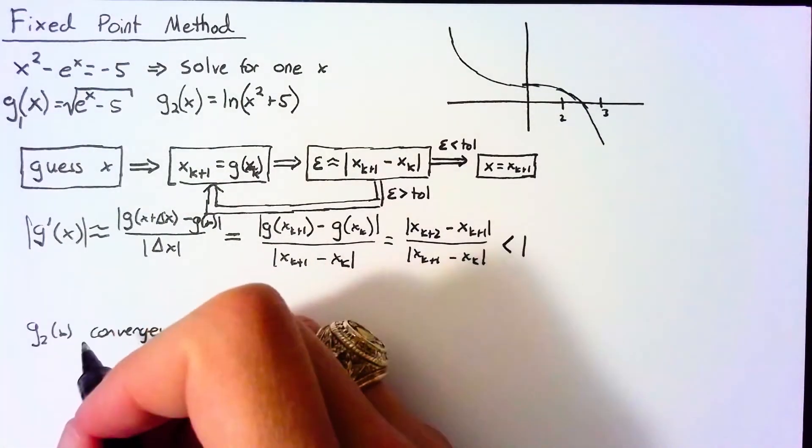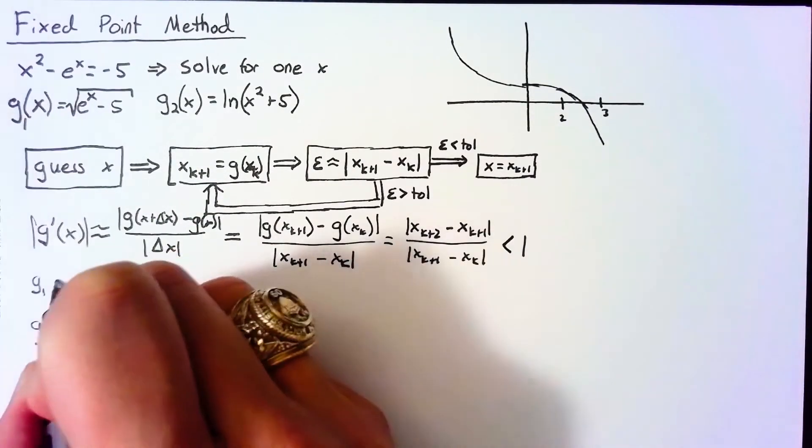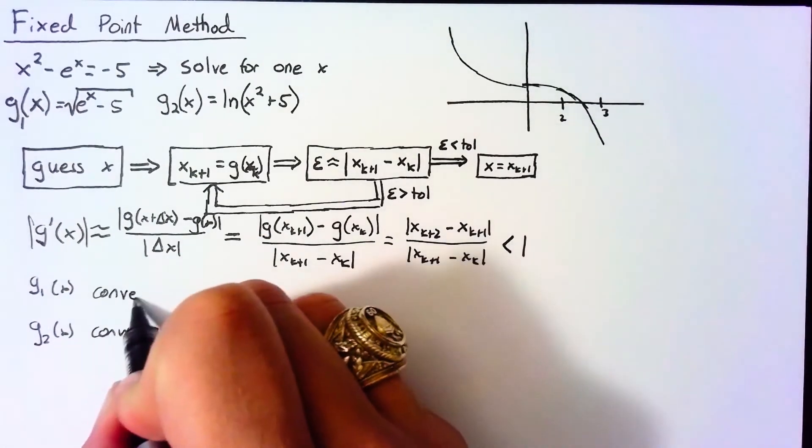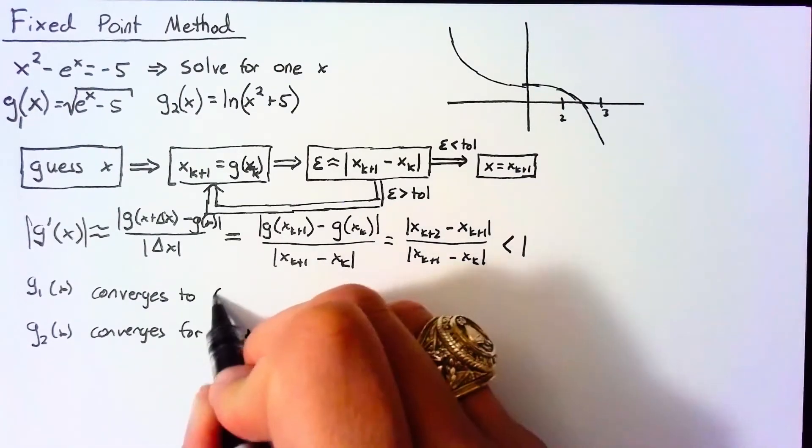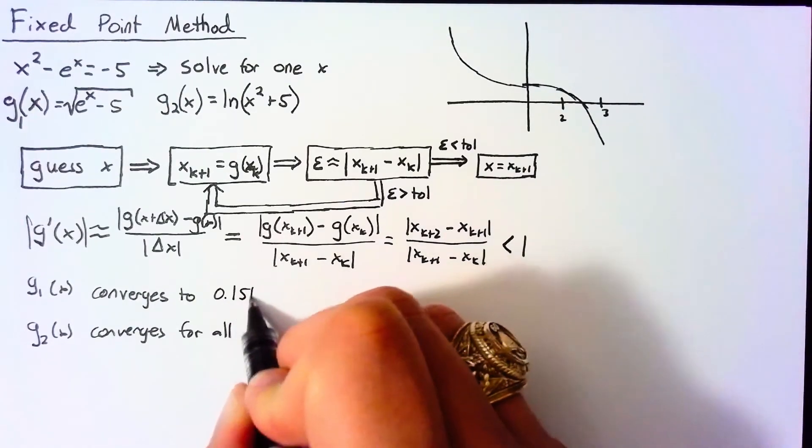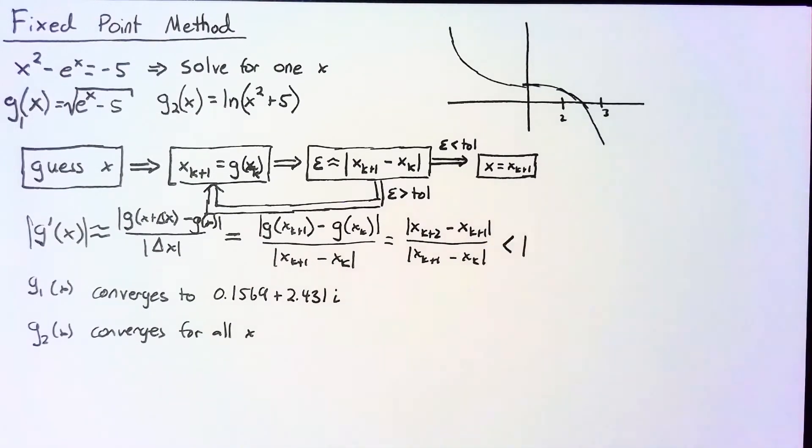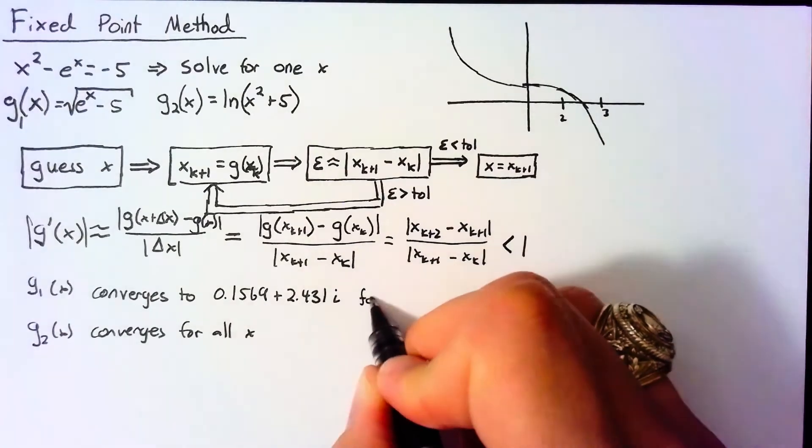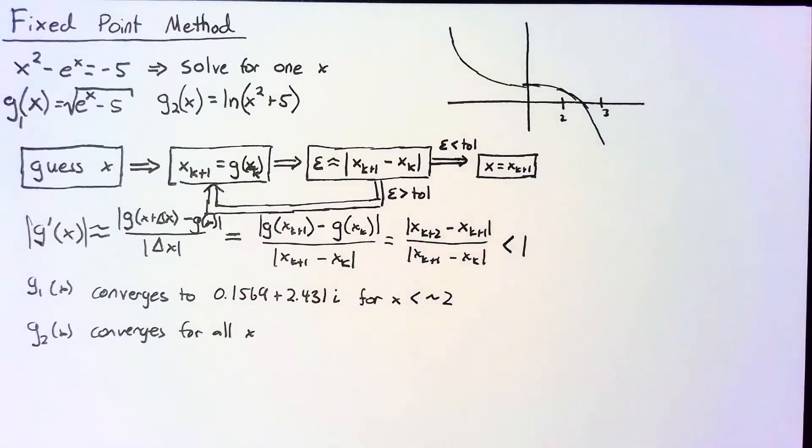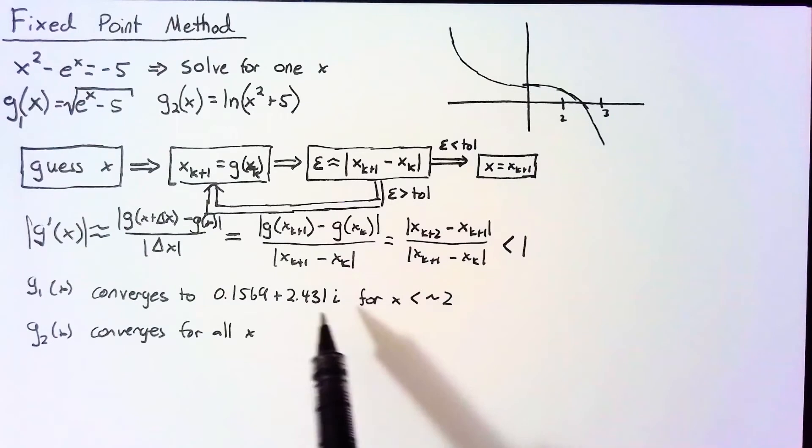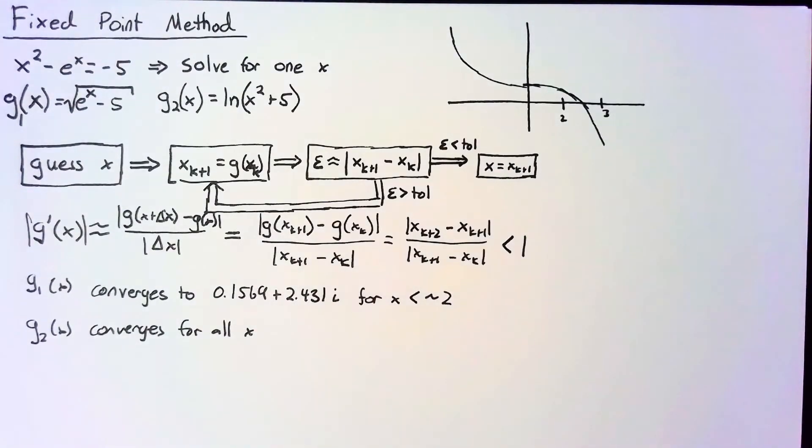And in fact, g₁(x) converges not to our zero that we're trying to find here, but it converges to this complex number, 0.1569 + 2.431i. And it does that for x less than about 2. So you can plug any number less than 2 into this algorithm as your initial guess, and you should end up with this complex number if you do enough iterations.